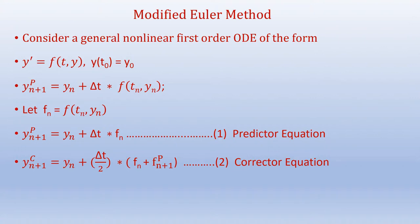Consider a general nonlinear first-order ODE of the form y' = f(t, y), with initial condition y(t₀) = y₀. The modified Euler method uses two equations: the predictor equation y_{n+1}^p = y_n + Δt·f_n, and the corrector equation y_{n+1}^c = y_n + (Δt/2)·(f_n + f_{n+1}^p). Together, these form the modified Euler method, also called Heun's method, and it is a two-step method.